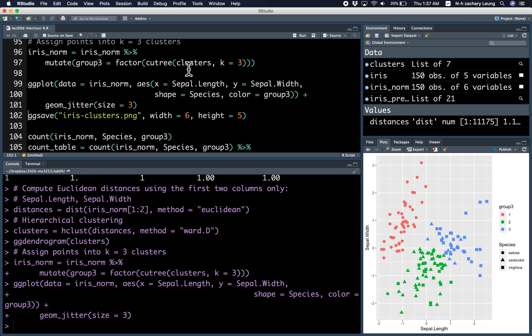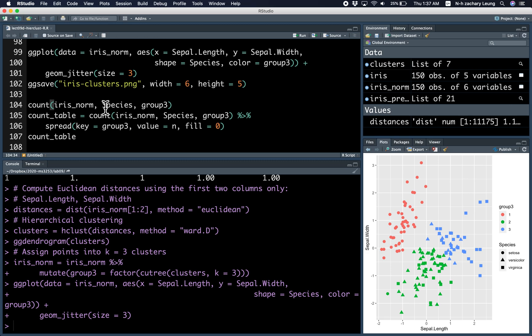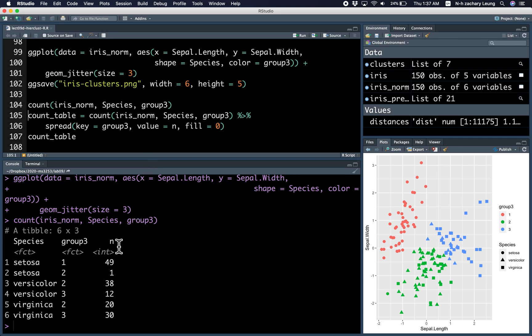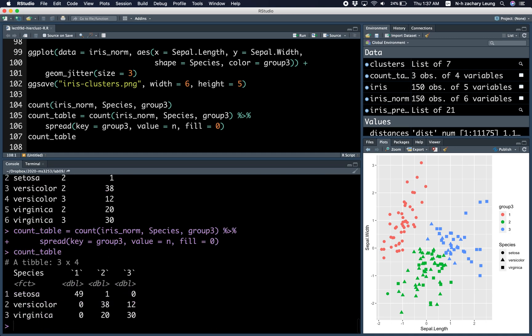Finally, you can count the number of observations where we got this value of species and this value of the cluster. And you can also rearrange that into a nicer table like this.